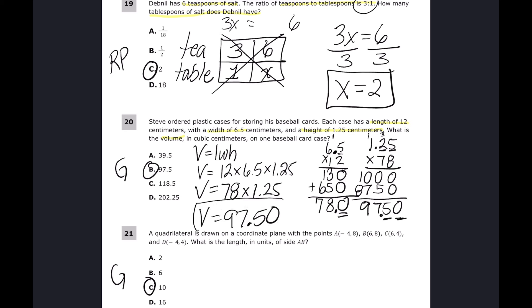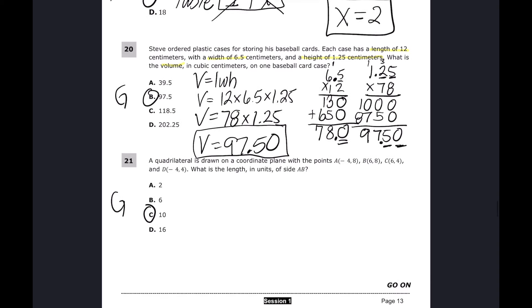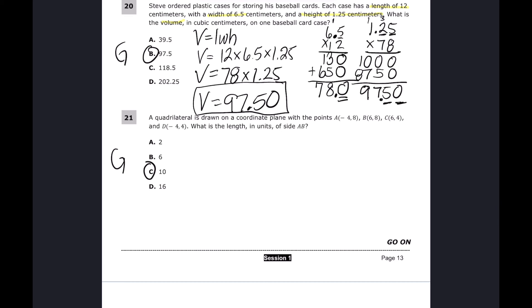The number of times mistakes happen when rushing is unbelievable — it doesn't mean you don't know math, it means you're not paying attention. Intentionally slowing yourself down is why teachers ask you to show your work. It helps you avoid silly errors. By sixth grade most people know how to multiply well, so showing work is about reducing careless mistakes.